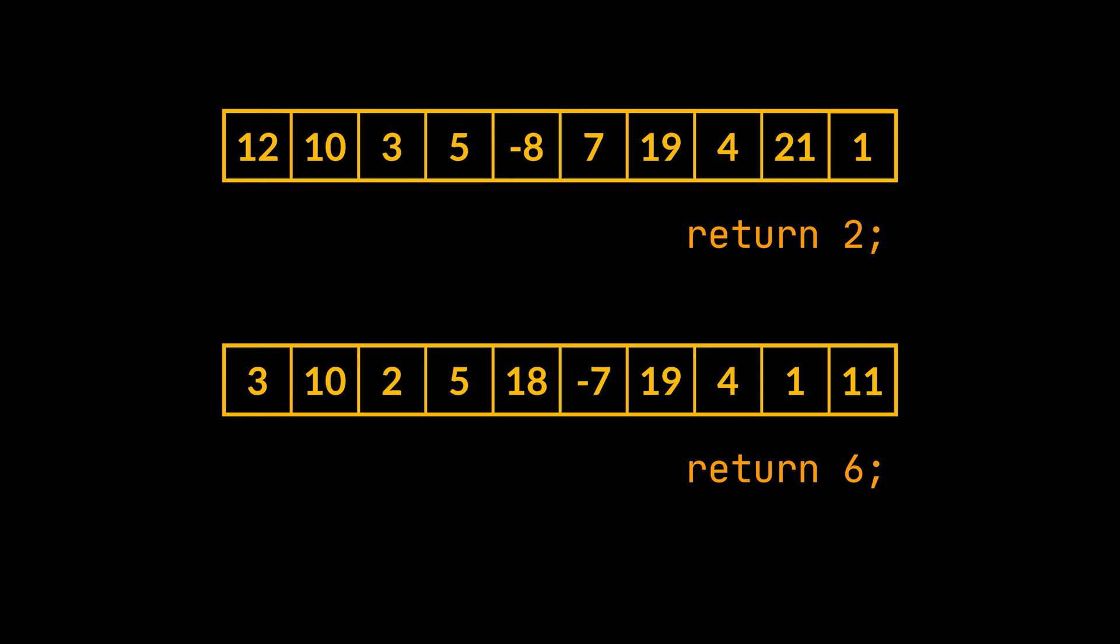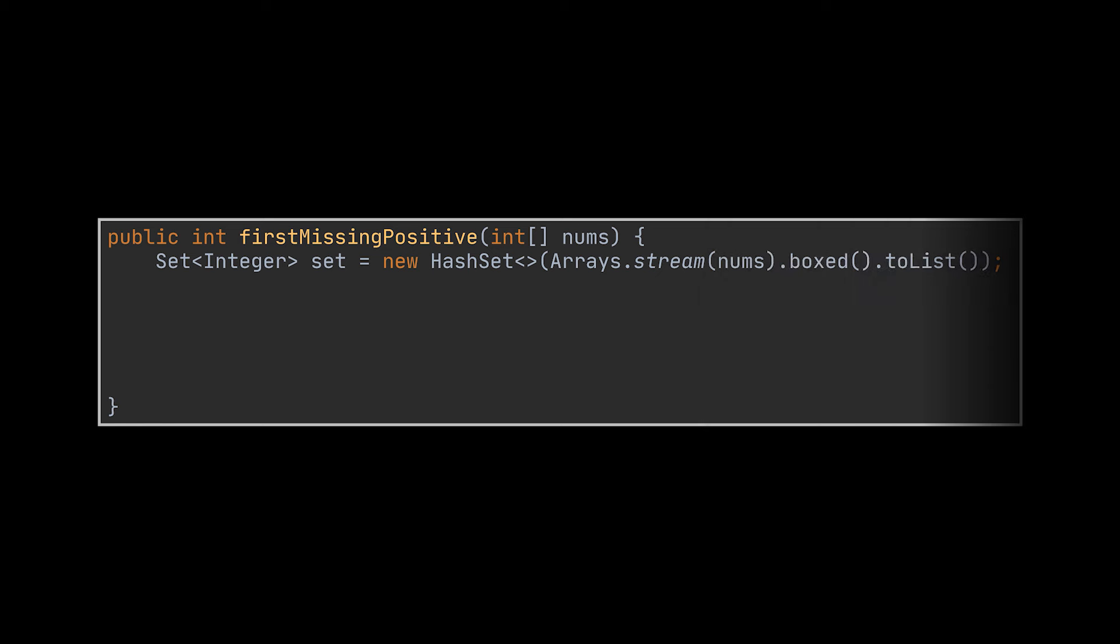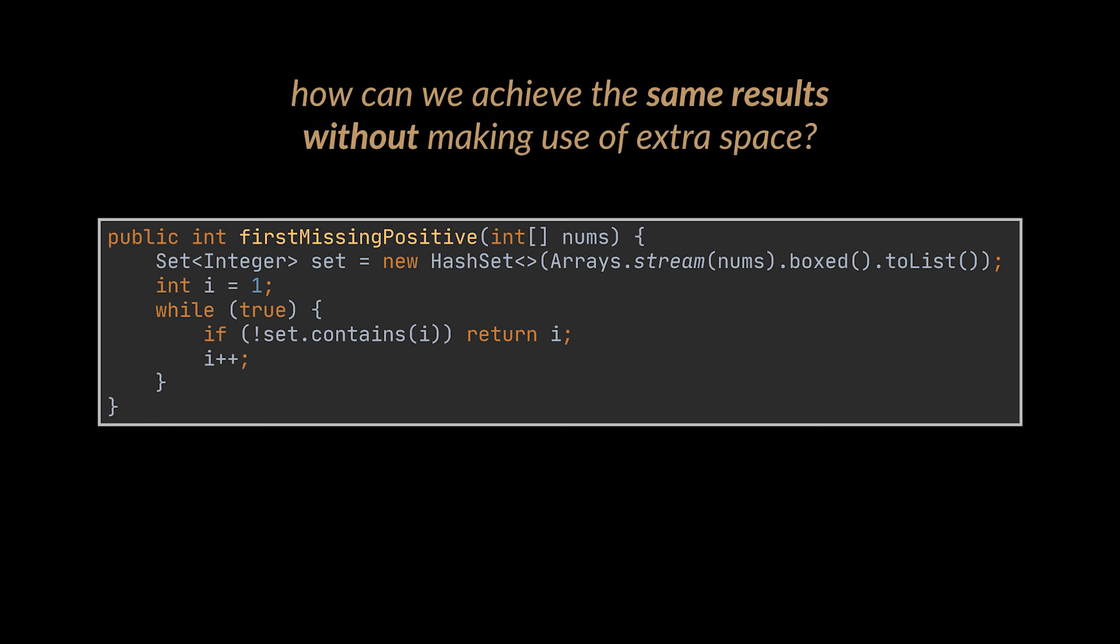Now to tackle this problem you can, of course, take a very similar approach to the previous implementation and start by transforming the given array to a set. Then initialize a variable at 1 and keep incrementing it while looking for it in the set until we hit a non-present integer, that value will be the result we want. Same follow-up question as before. How can we achieve the same results without making use of extra space?